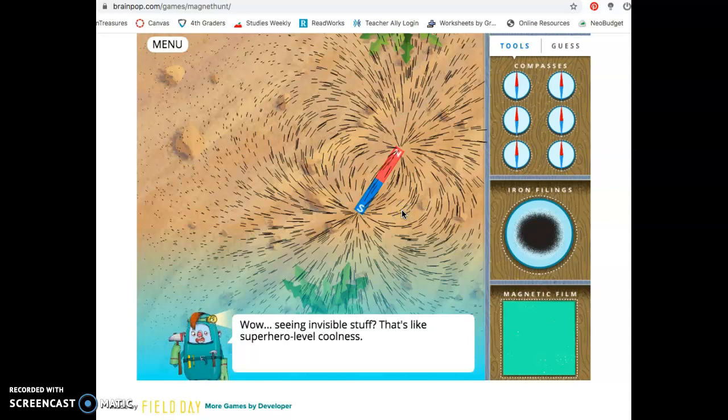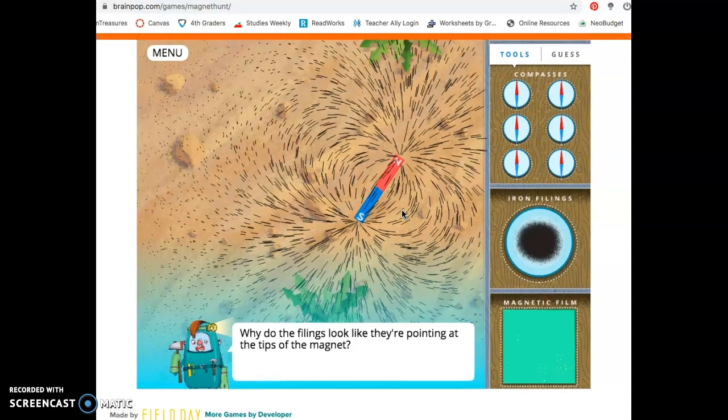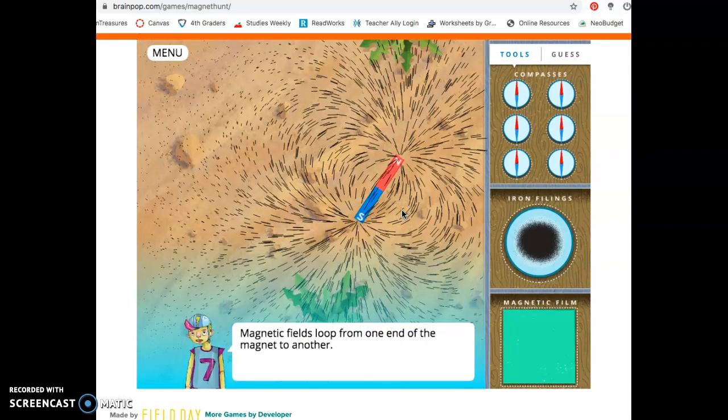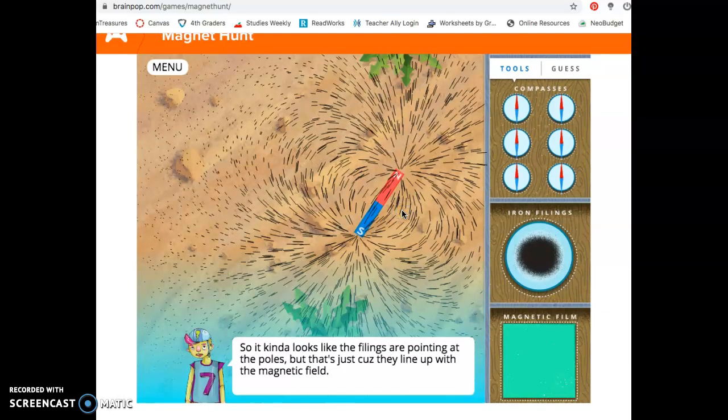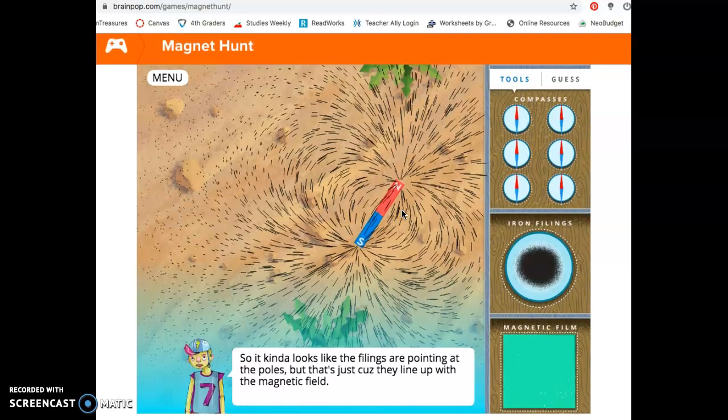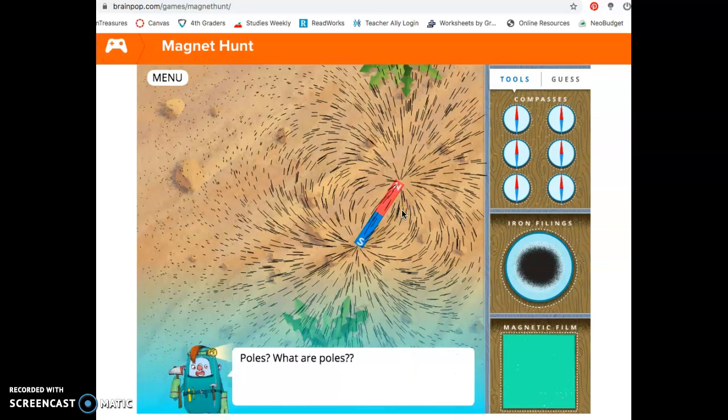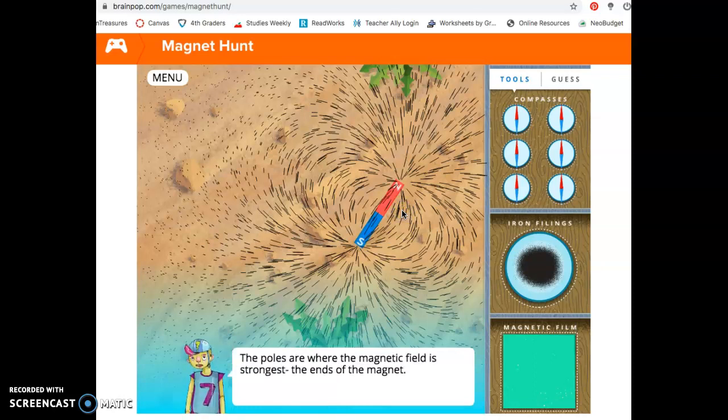Wow! Seeing invisible stuff? That's like superhero level coolness! Why do the filings look like they're pointing at the tips of the magnet? Magnetic fields loop from one end of the magnet to another. So it kind of looks like the filings are pointing at the poles, but that's just because they line up with the magnetic field. Poles? What are poles? The poles are where the magnetic field is strongest. The ends of the magnet. Cool! Iron filings, check! Do we get any other superhero tools?